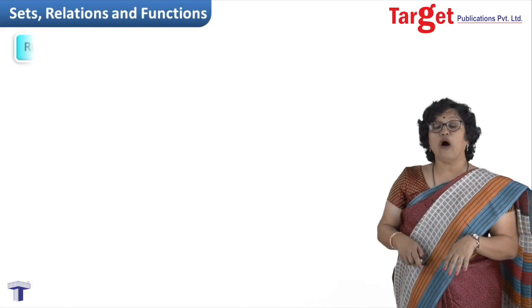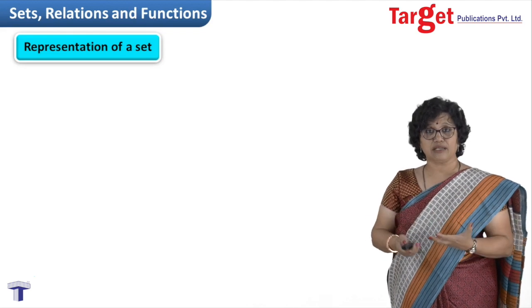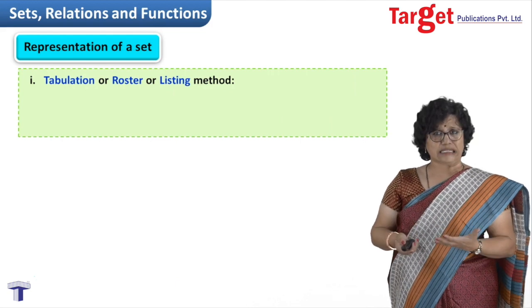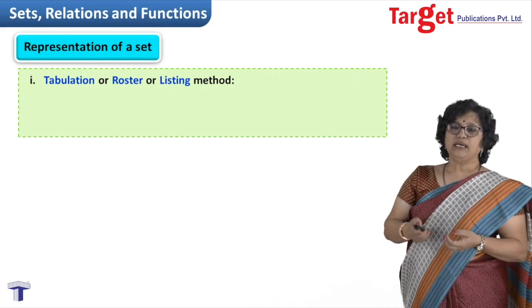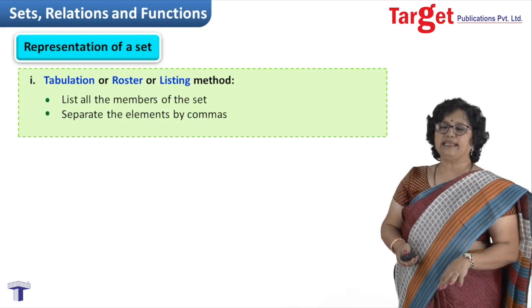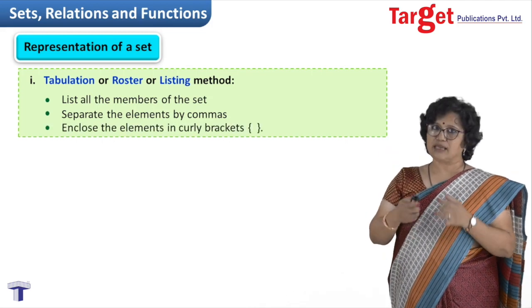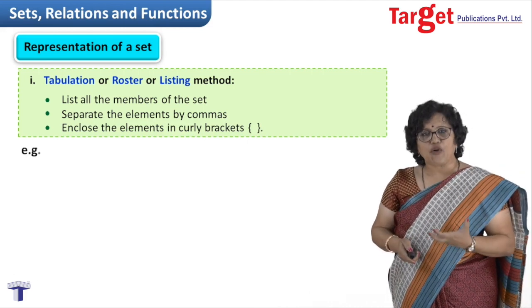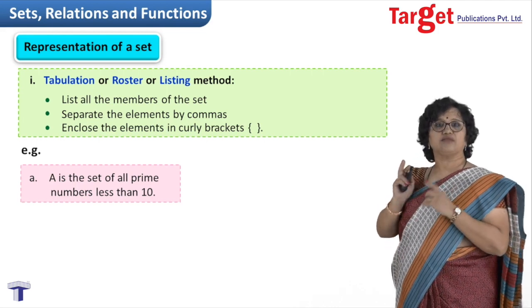Then we go for how do we represent a set. Mathematical notation for that - one is tabulation, or we call it generally listing method, or some people call it roaster. In this we list all the elements separated by comma, and then we keep curly brackets. So if I have to write the set of all prime numbers less than 10, instead of writing it all out, I can write it as 2, 3, 5, 7 in curly brackets. That would be the notation.